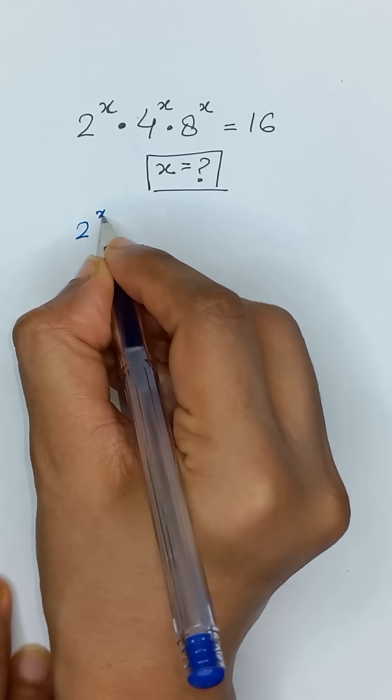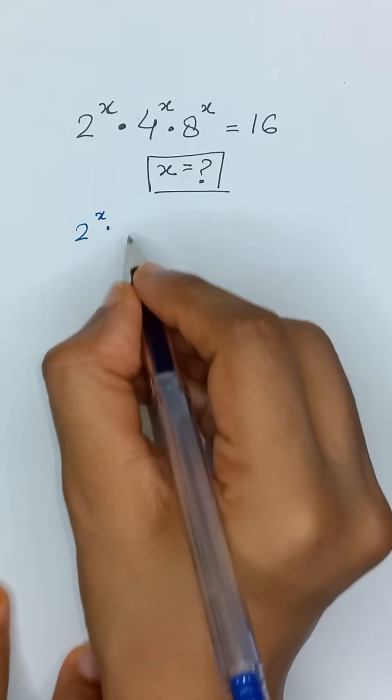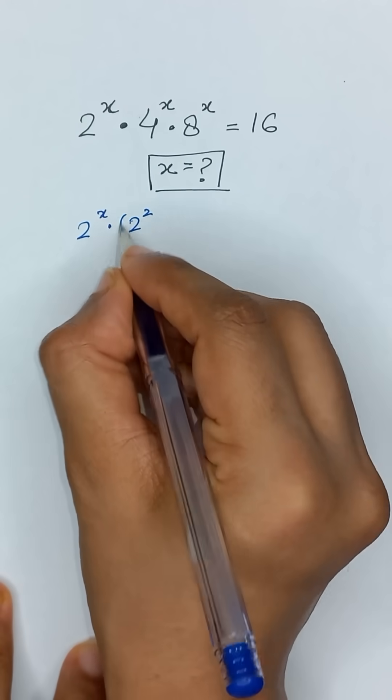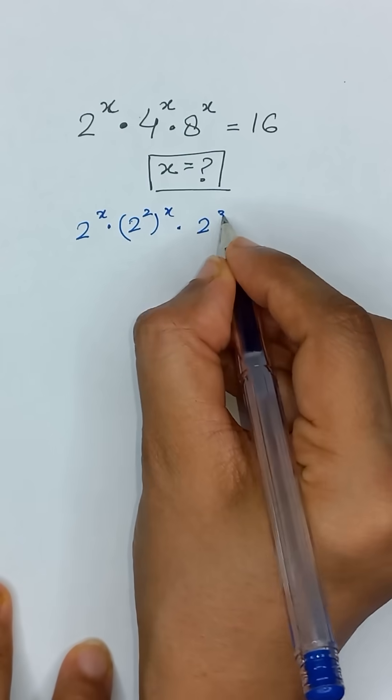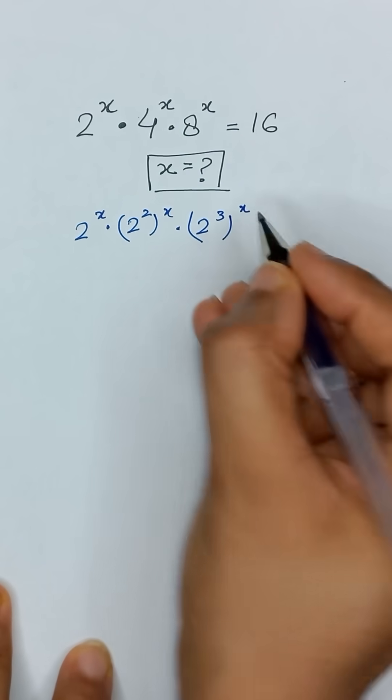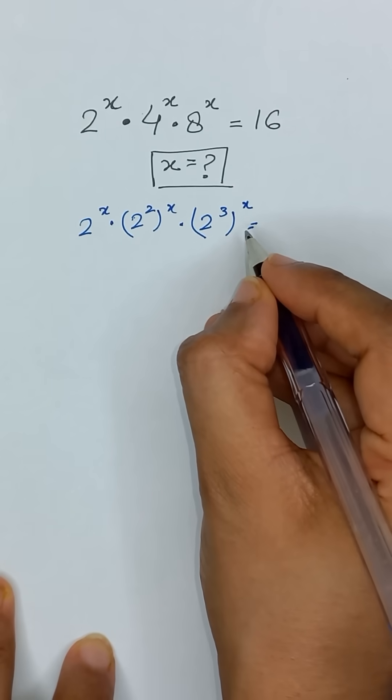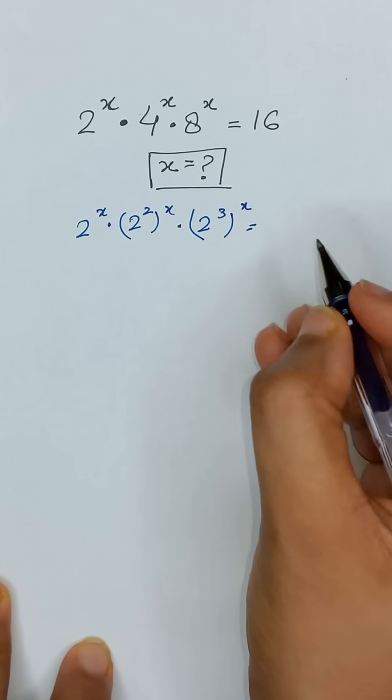It will become 2 to the power x times 4, which can be written as 2 to the power 2 to the power x, times 8, which is 2 to the power 3 to the power x, equals 16, which is 2 to the power 4.